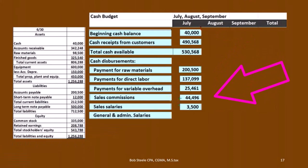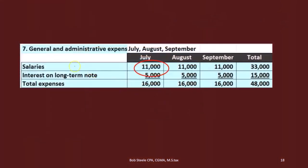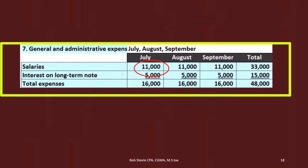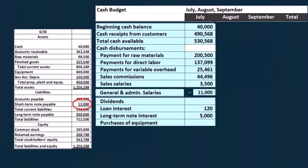Then we're going to have the general and administrative expenses. Once again, we're going to jump back to our step seven, where we calculated the general and administrative. We're going to look at the salaries, and later we're going to see where that note is calculated as well. So there is our general and administrative that we pulled over.